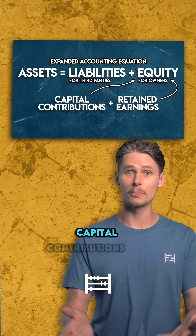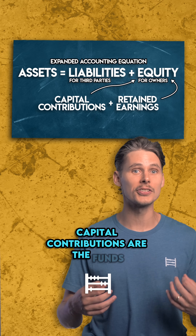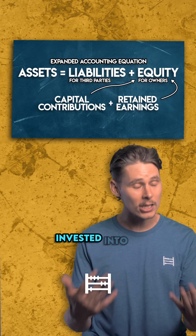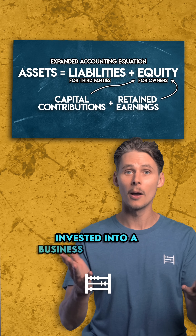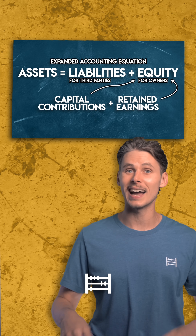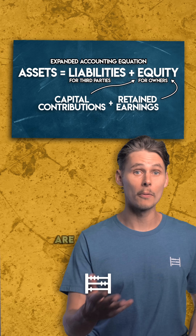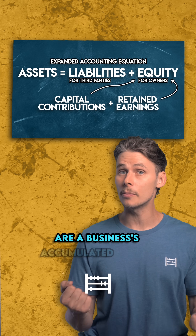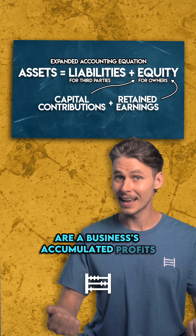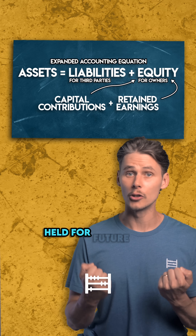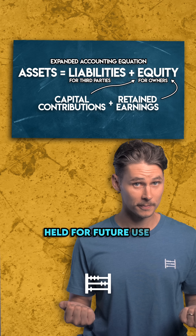Capital contributions are the funds invested into a business by its owners out of their own pockets. And retained earnings are a business's accumulated profits held for future use.